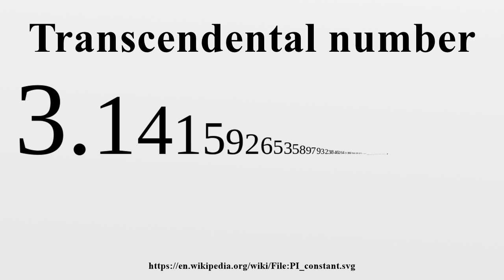For example, π and -π are both transcendental, but π + (-π) = 0 is obviously not. It is unknown whether π + e, for example, is transcendental, though at least one of π + e and π·e must be transcendental. More generally, for any two transcendental numbers a and b, at least one of a + b and ab must be transcendental.